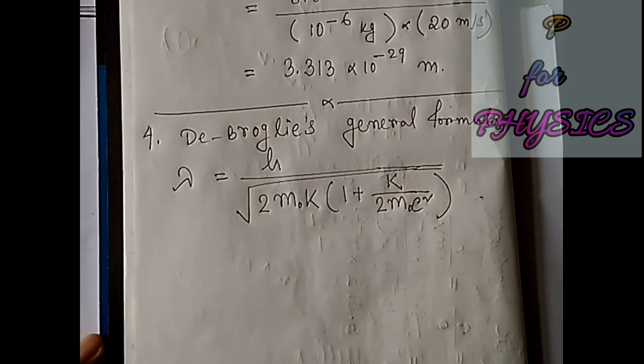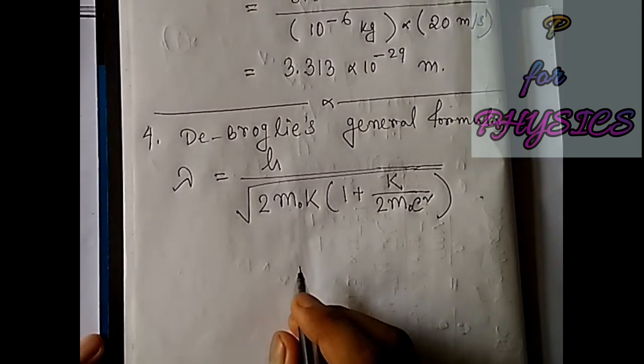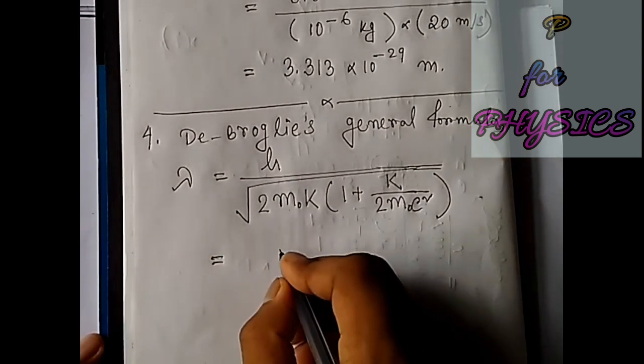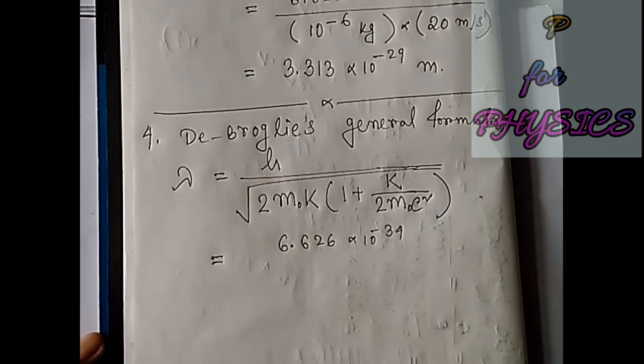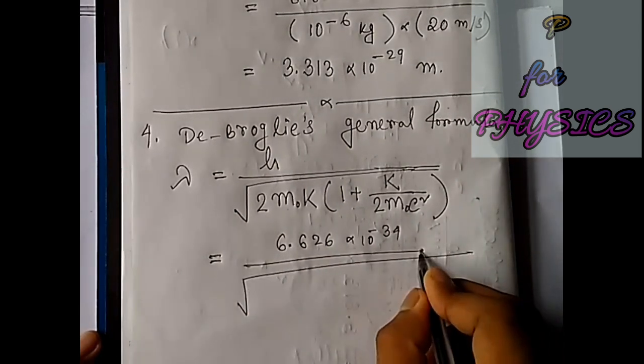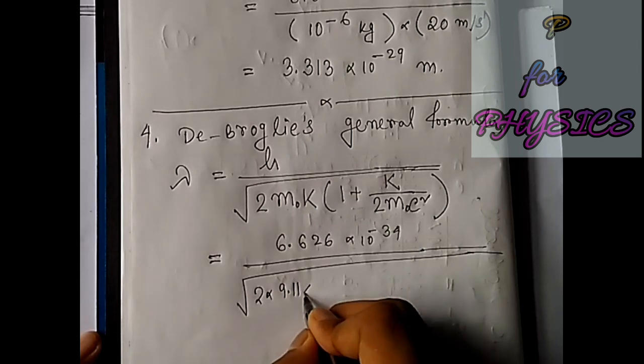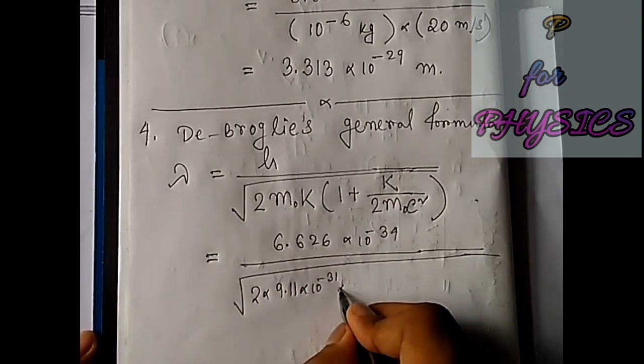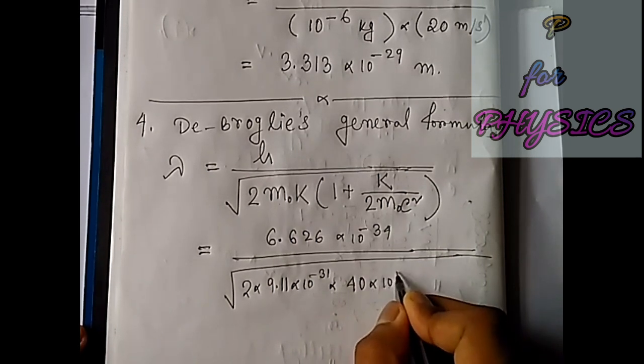Now the kinetic energy is given as 40 kiloelectron volts. If we plug this value, let's plug it like 6.626 - we are doing it in SI form - so it will be the square root of 2 times the rest mass of the electron, which is 9.11 times 10⁻³¹ kg. Here, the kinetic energy's value is 40 kiloelectron volts.